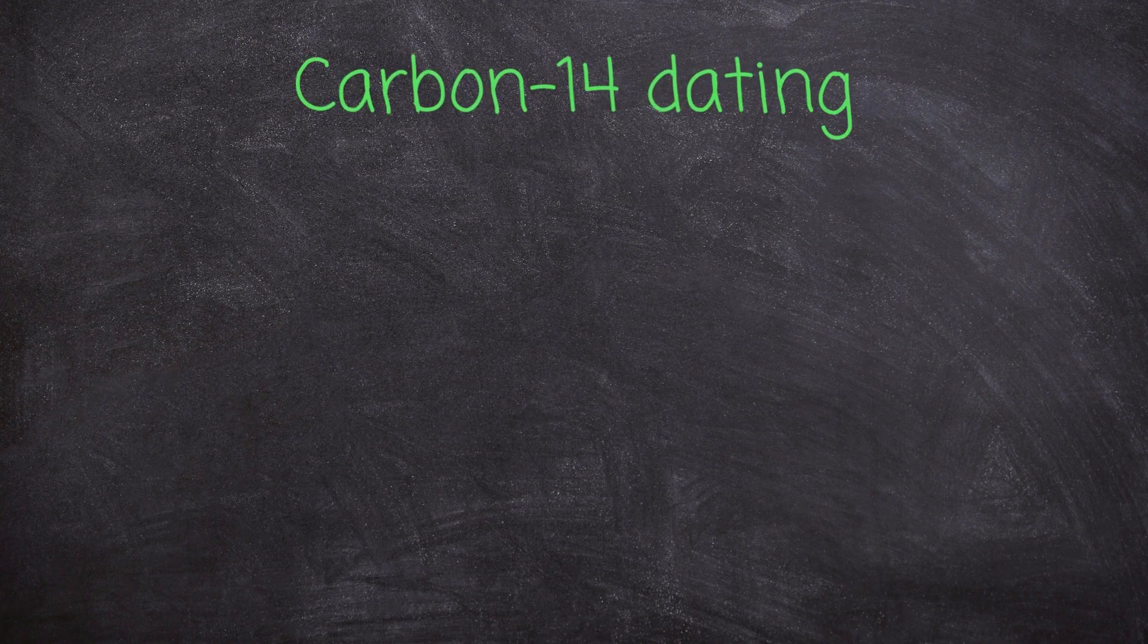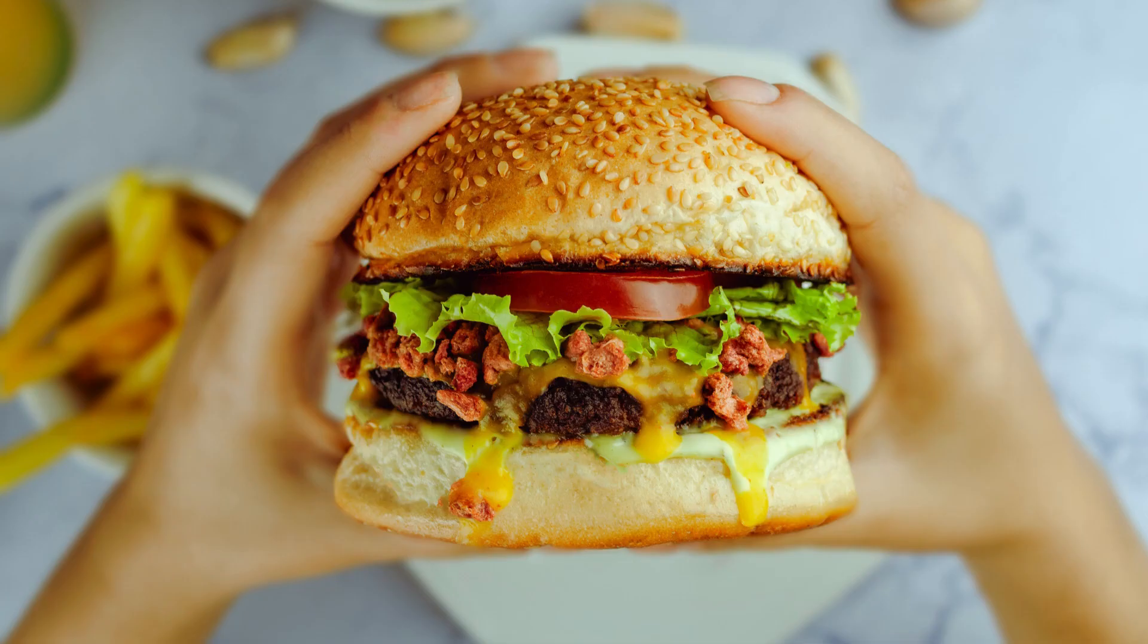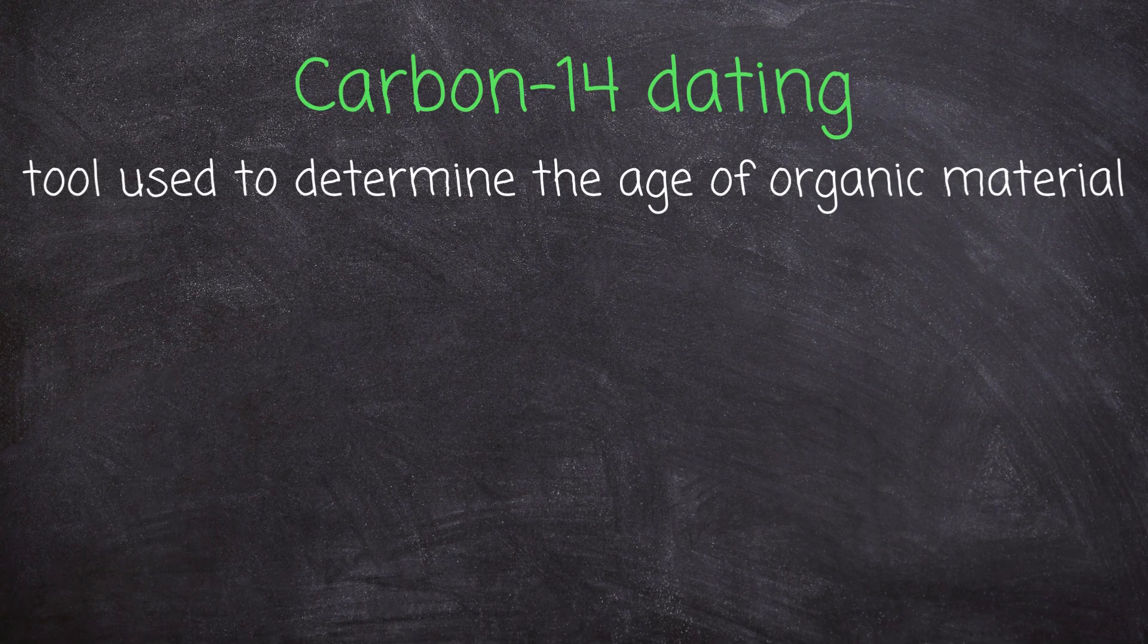This method is a powerful tool used by scientists to determine the age of organic materials. Here's how it works: living organisms constantly absorb carbon from the atmosphere and the food they consume. This carbon includes all isotopes of carbon, including the stable carbon-12 and the radioactive carbon-14.